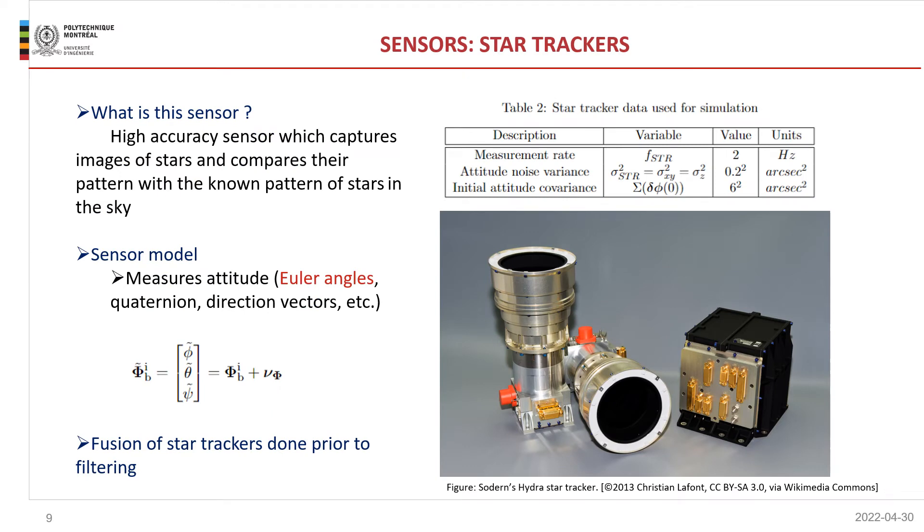The second type of sensors are star trackers. We've selected two star trackers for our system. We're going to discuss why on the next slide, but it's mainly for higher accuracy. Talking about accuracy, the star tracker shown on the image has an accuracy of one arc second. It was developed by Sodern Hydra, and it's already old. This photo was taken in 2013. Modern star trackers, or more modern star trackers, are even more accurate. They have an accuracy of 0.2 or 0.1 arc seconds in all three axes. But what is a star tracker? We've discussed it in class, but star trackers are high accuracy sensors. They capture images of stars and they compare the pattern of the images with known patterns of stars that they have in their catalog, and they determine the attitude of the body frame with respect to the ECI frame based on that. So they report measures in the form of Euler angles, quaternions, or direction vectors, and for our project, we've decided to work with Euler angles.